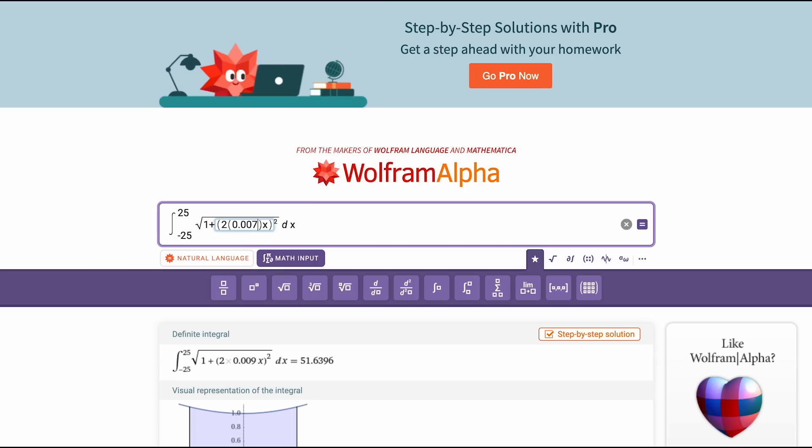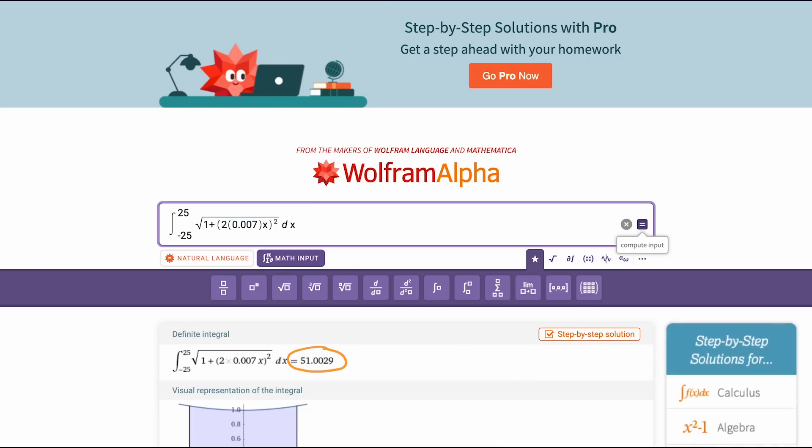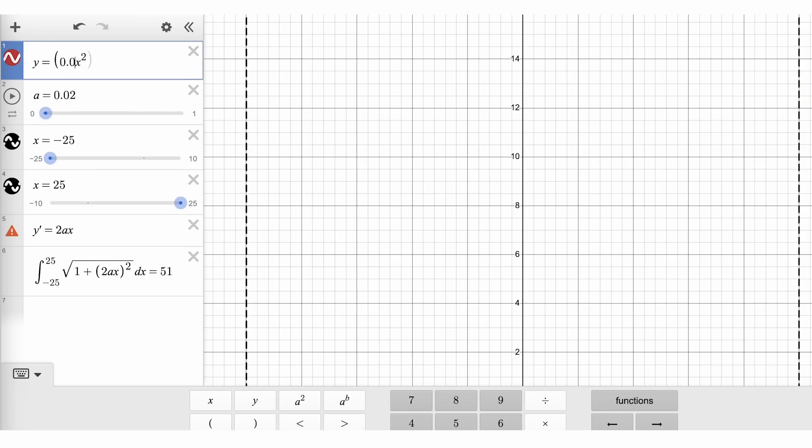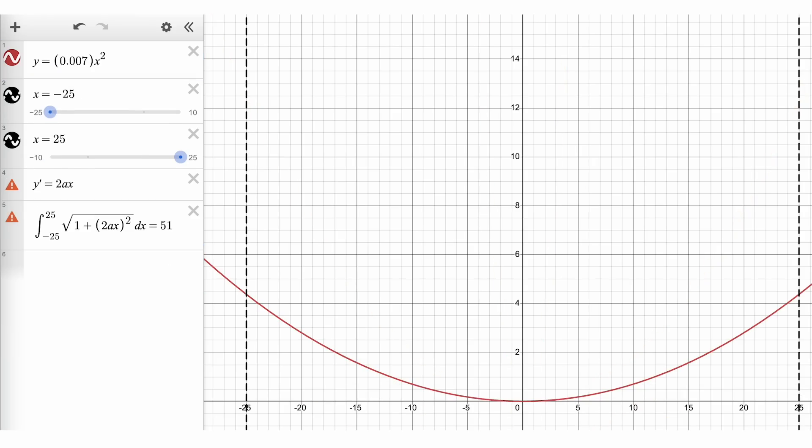We simply change the value of a in our integral until we get the length of 51 units. When a is 0.007, we get a length of about 51.0029, which will be plenty close enough for us. So now we have a curve that is close to the sagging rope, and we can finally answer our question.